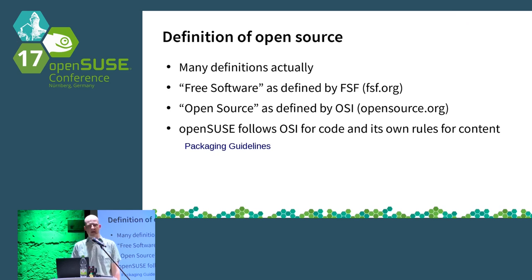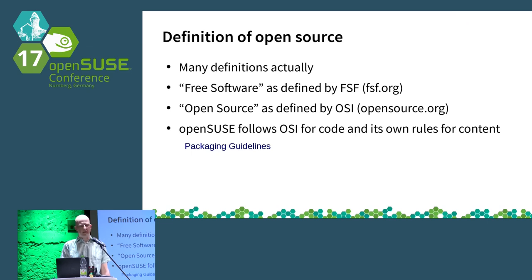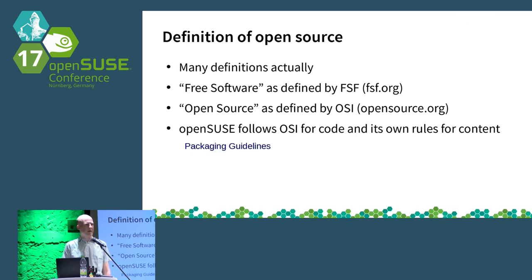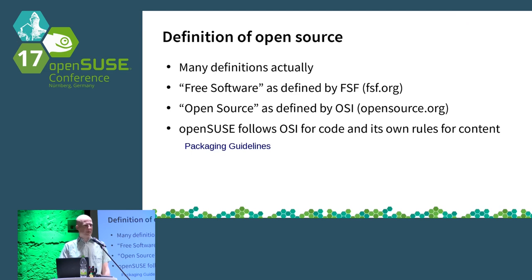For code and for content like wallpapers, icon themes, you name it — there are different rules, and they are listed in the packaging guidelines. They are mainly about knowing where it is coming from, that there are no trademarks, and no porn. The packaging guidelines even specify that there are better places to get porn.